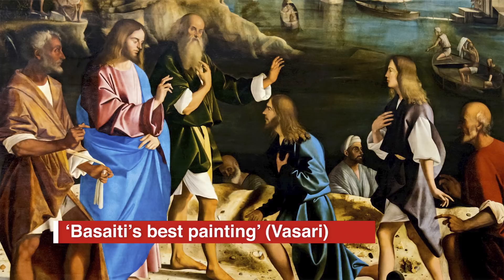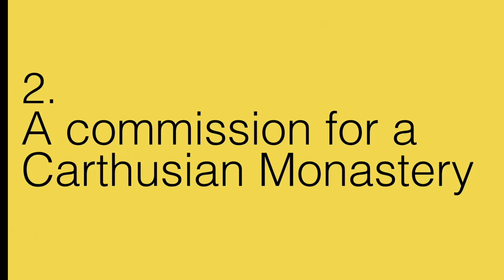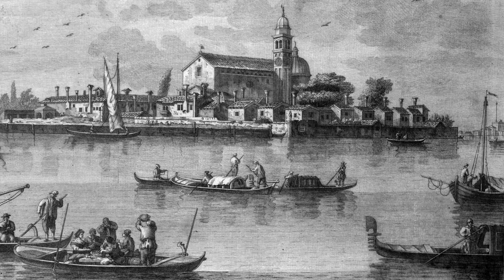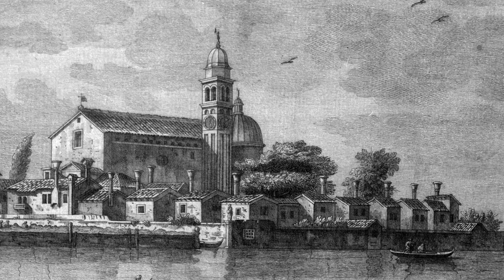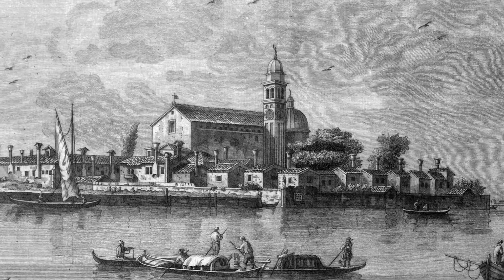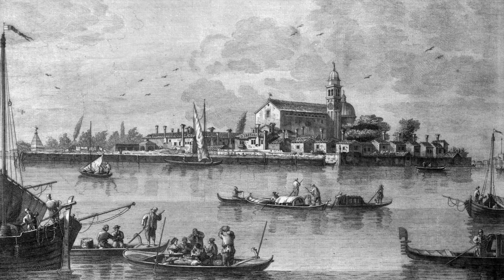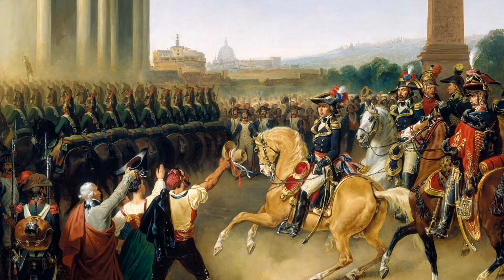The second point worth noting is the provenance. This painting was a commission for a now-demolished Carthusian monastery — specifically for the high altar of the Carthusian church of Sant'Andrea de la Certosa in Venice. An engraving shows the monastery with monks' cells surrounding it, where the very architecture helped monks combine the solitary life of hermits with a common life within the walls. The monastery was demolished in the early 19th century following the Napoleonic occupation of Italy, and this painting then joined the collections of the Galleria dell'Accademia.